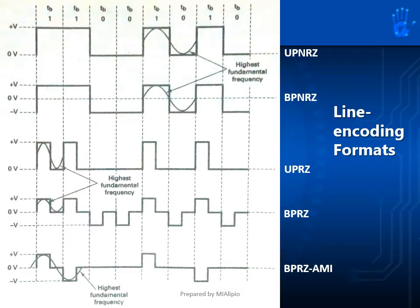Let's take a look at the unipolar non-return to zero, or UPNRZ. This is the most basic line encoding format. The waveform is high when the bit is 1 and low when the bit is 0. Next, we have the bipolar non-return to zero, or BPNRZ. Similar to UPNRZ, the waveform is high when the bit is 1 and low when the bit is 0. The difference is that the high level is set to positive V and the low level is set to negative V.